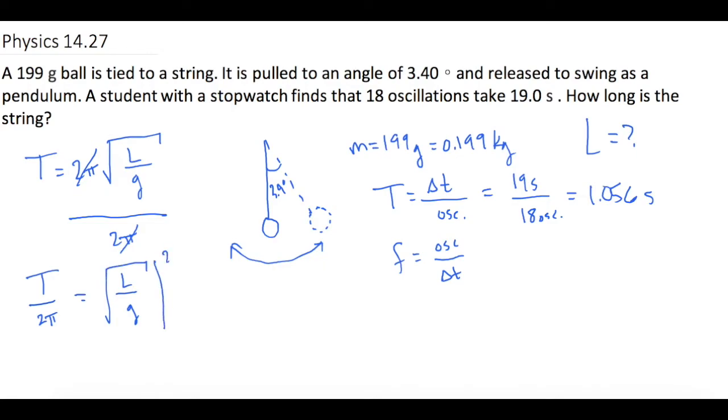So now let's square both sides of the equation. The square cancels the square root, and this gets squared. So now we have L over g equals T divided by 2π squared. Sorry I switched that around on you, hopefully that wasn't a big deal.